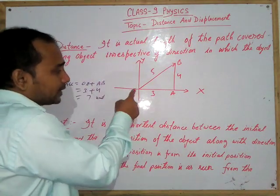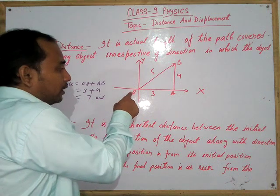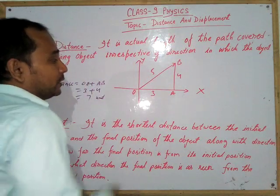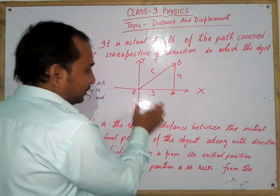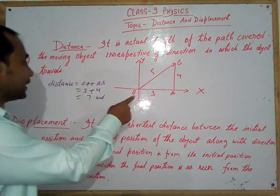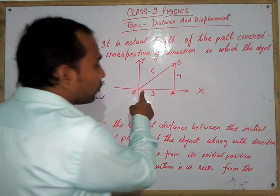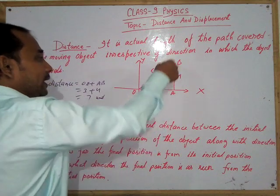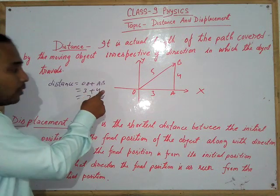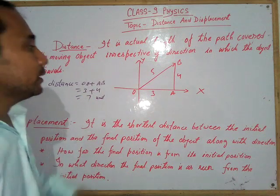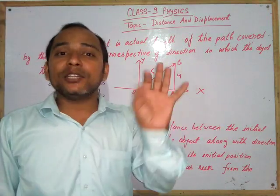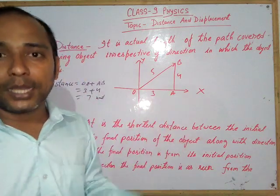If anybody starts its travel from point O to A and after some time reaches point B, then the total distance travelled is the addition of the length of path OA and AB. That is OA plus AB. With OA equal to 3 and AB equal to 4, the total distance is 3 plus 4 equal to 7 units.